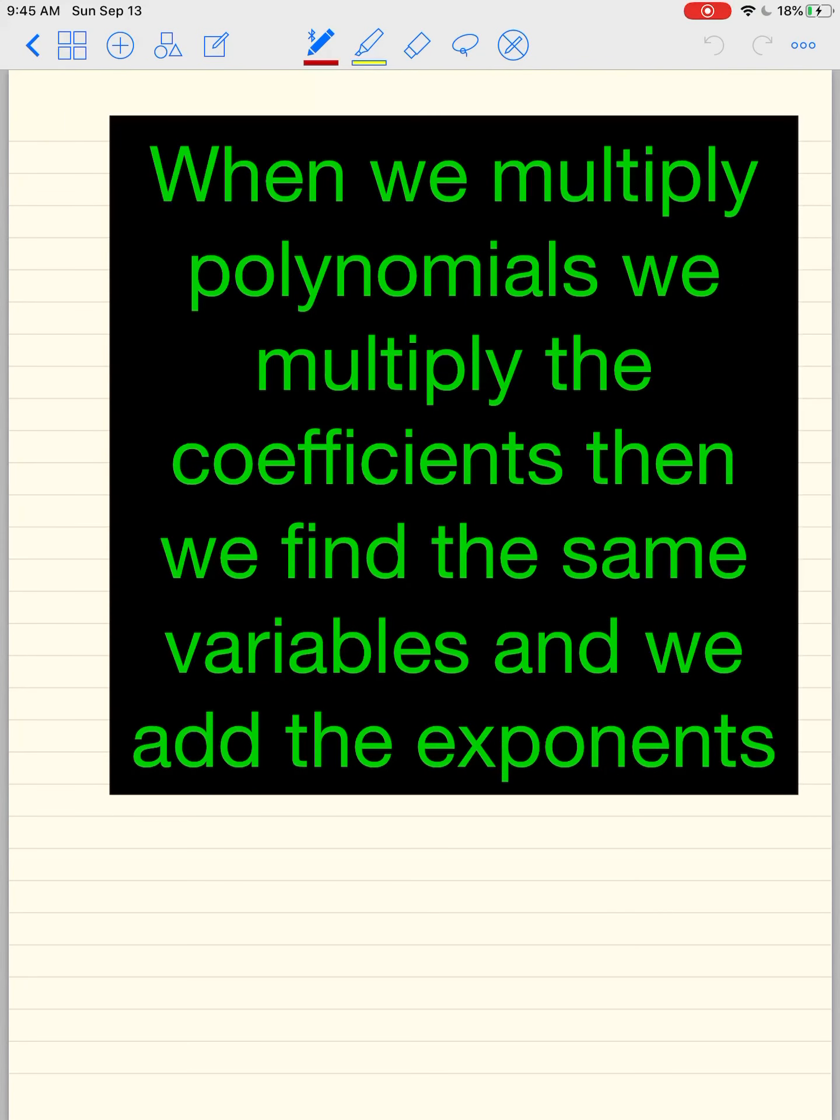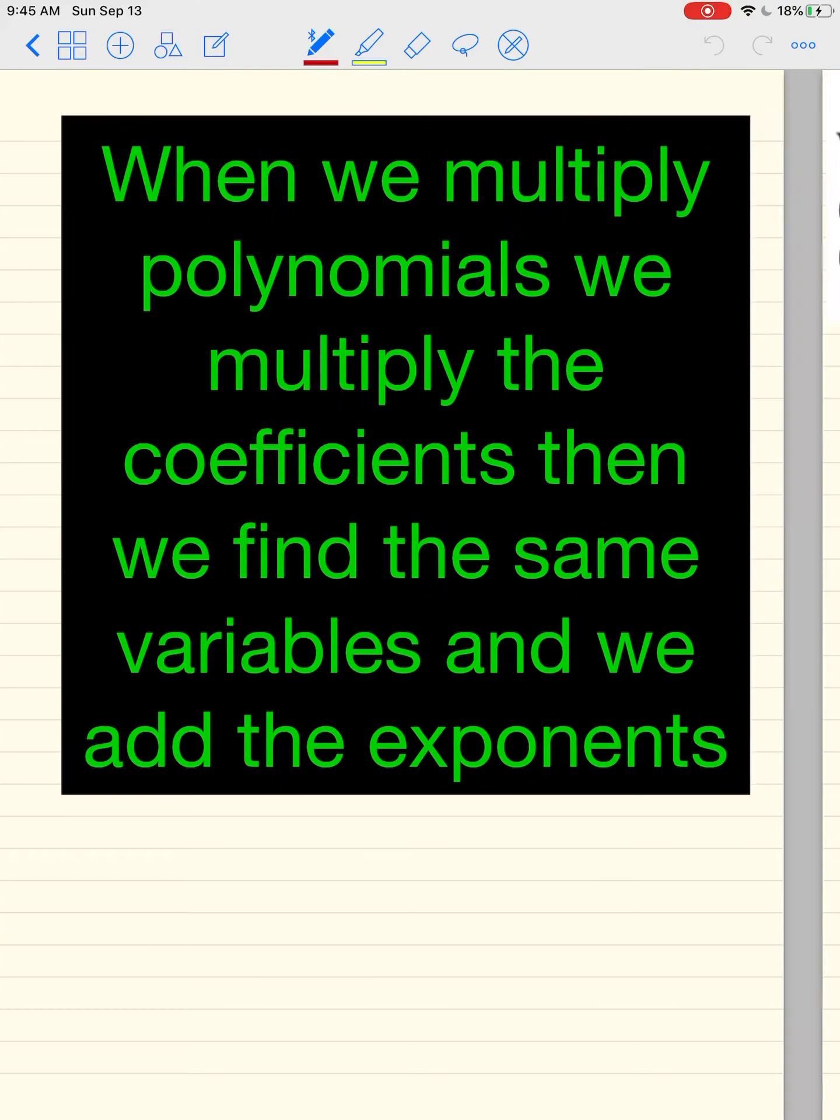So when we multiply polynomials, we multiply the coefficients, which are the numbers in front of the letters. Then we find the same variables or the letters, and we add the exponents. Okay, so let's try some examples here.